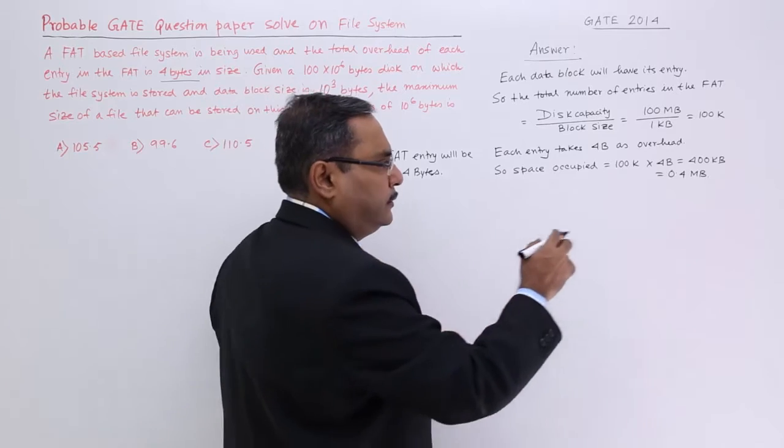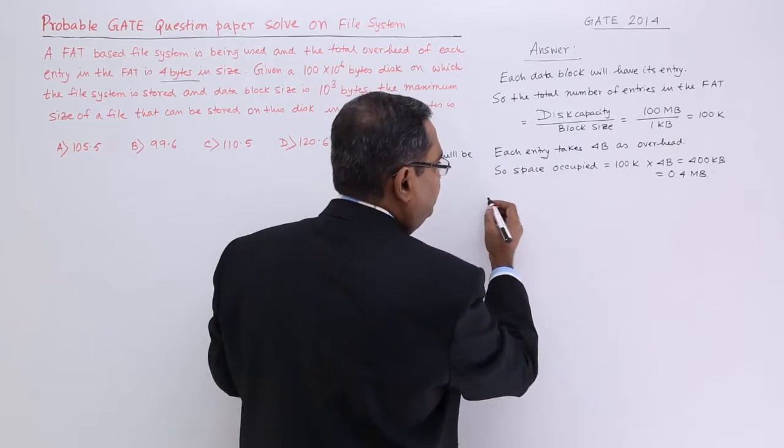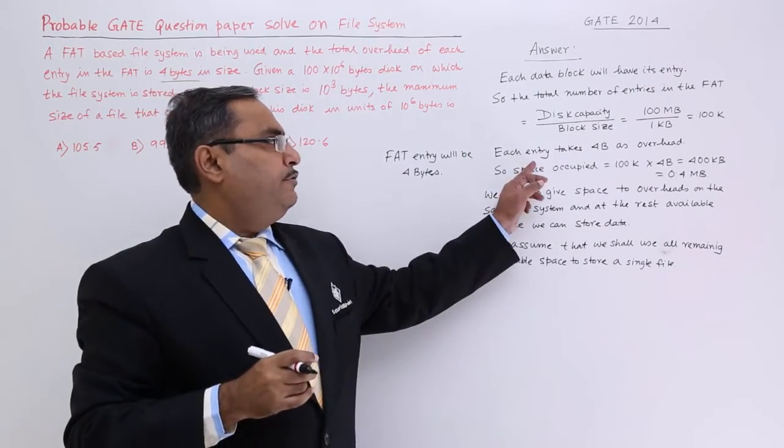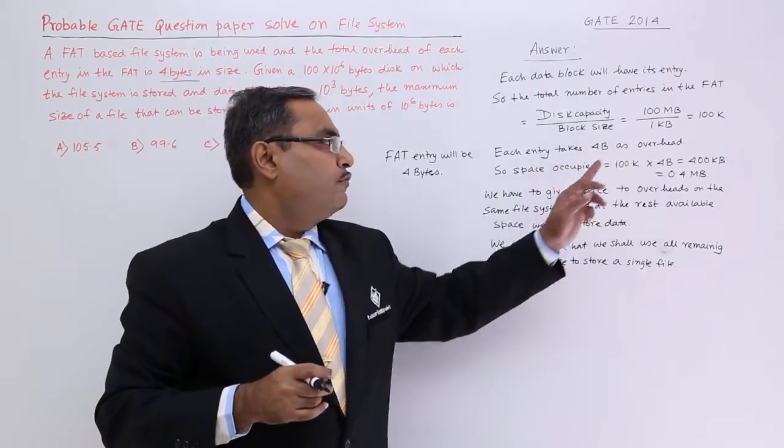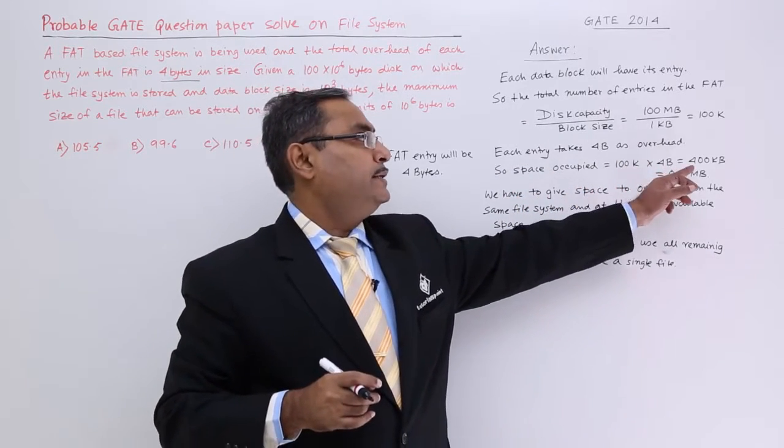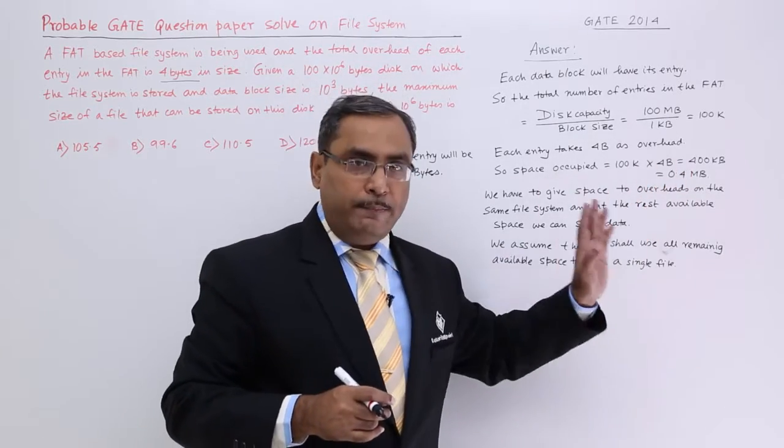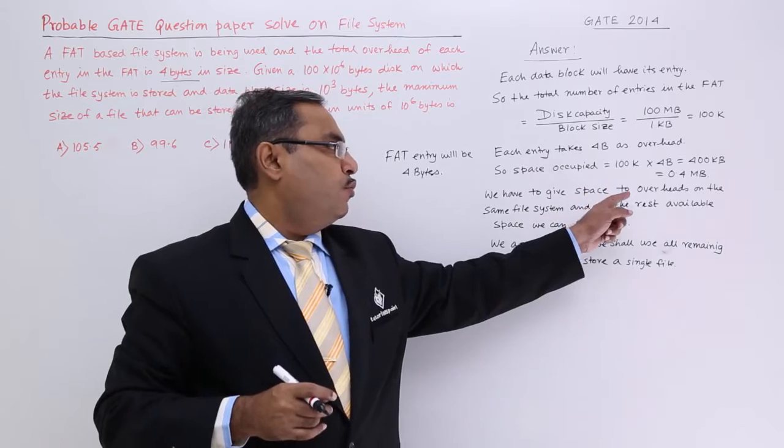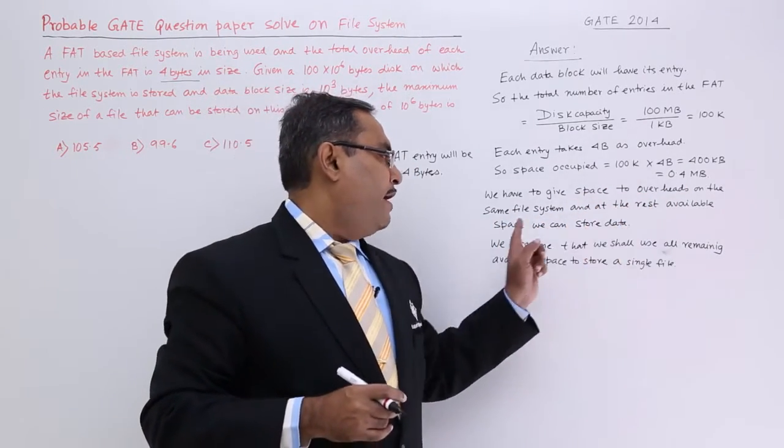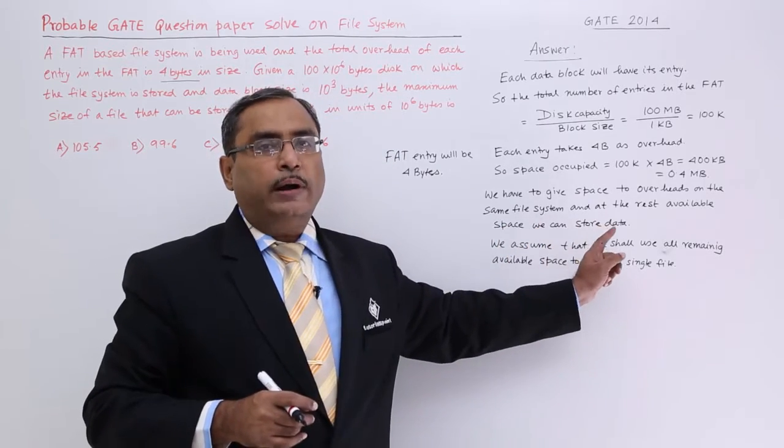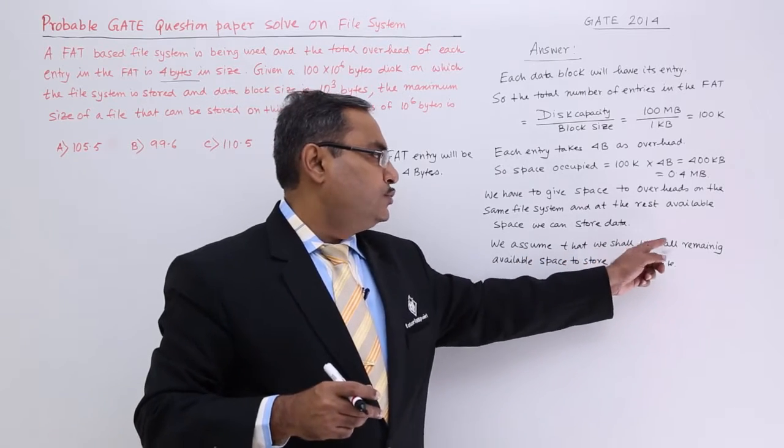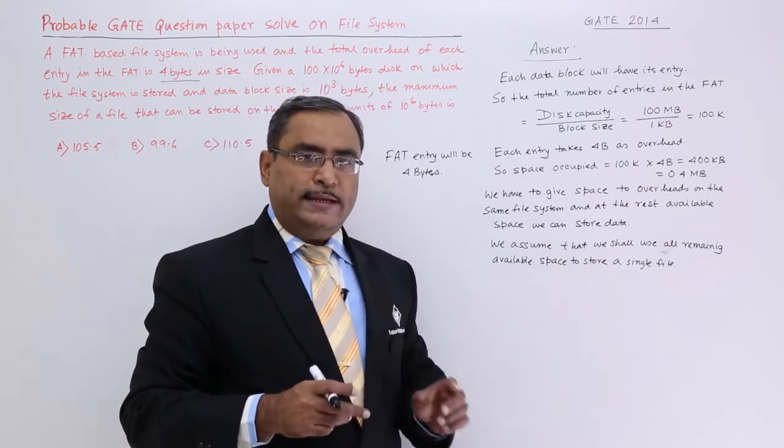I am writing the respective calculations. Each entry takes 4 bytes as overhead. Space occupied will be 100K × 4 bytes, that is 400K = 0.4 MB. We have to give space to overheads on the same file system and at the rest available space we can store our data, that is the file body. We assume that we shall use all remaining available space to store a single file.